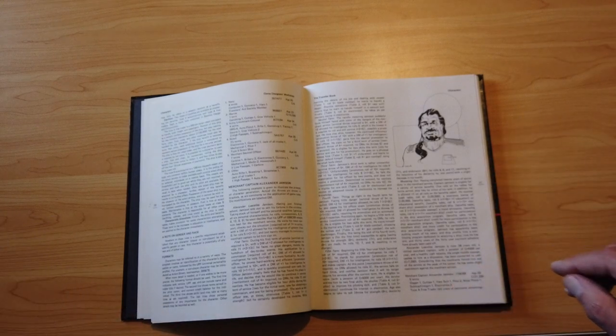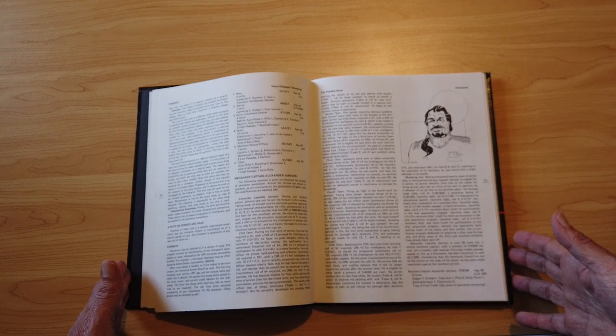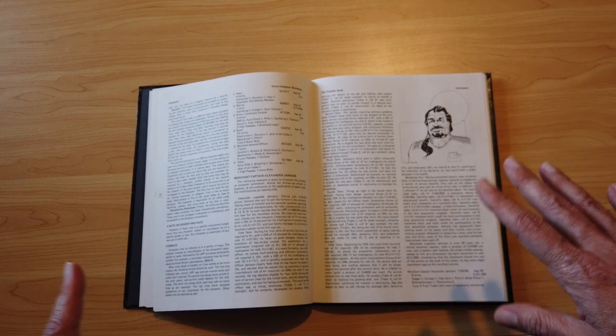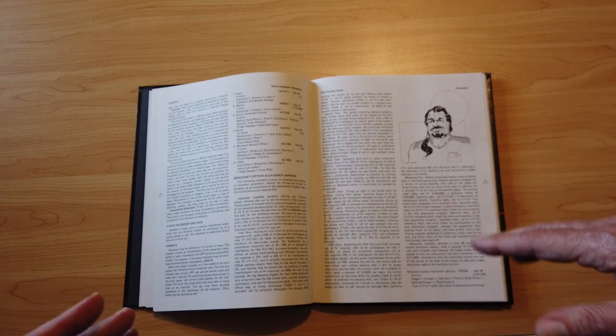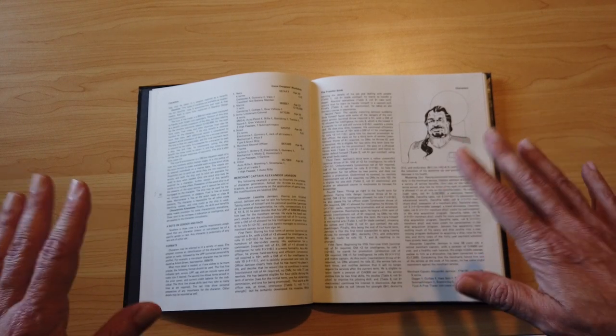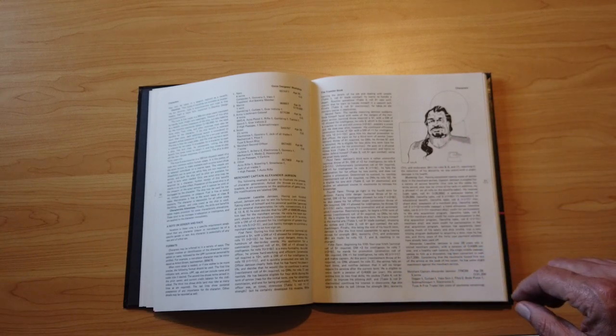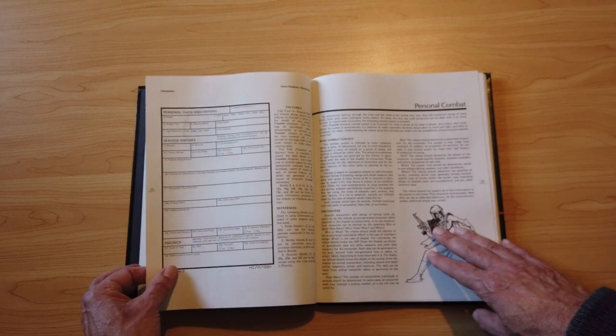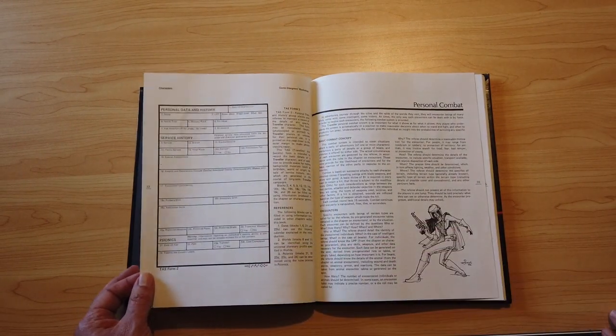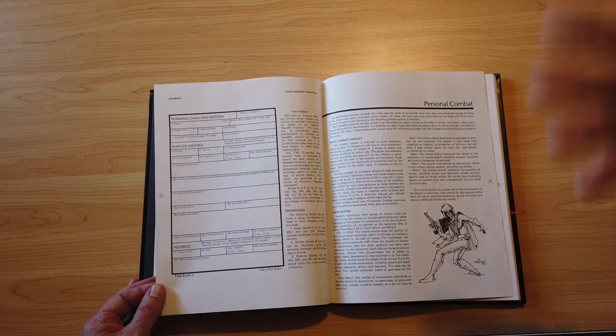Now one of the things that stood out to me about Traveler, being a big Star Trek and Star Wars fan by the time I got this, is that there are no aliens in the base rules here. They came out with modules where you could add aliens to the adventure, but there were no aliens in character creation from the book just the way it was. So I thought that was a little different. Traveler's big on creating things that look like forms. So here's your character sheet, and it looks like your personal data and history from a government form.